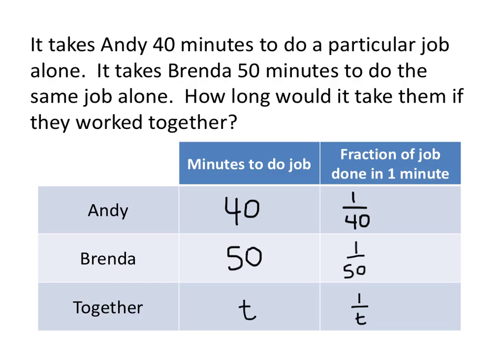But since they're working together, the amount of work that Andy gets done in one minute, plus the amount of work that Brenda gets done in one minute, if we add those two amounts of work together, we'll get the amount of work that they get done together. So if we add 1/40th to 1/50th, we will end up with 1 over t. And that gives us an equation that we can solve.